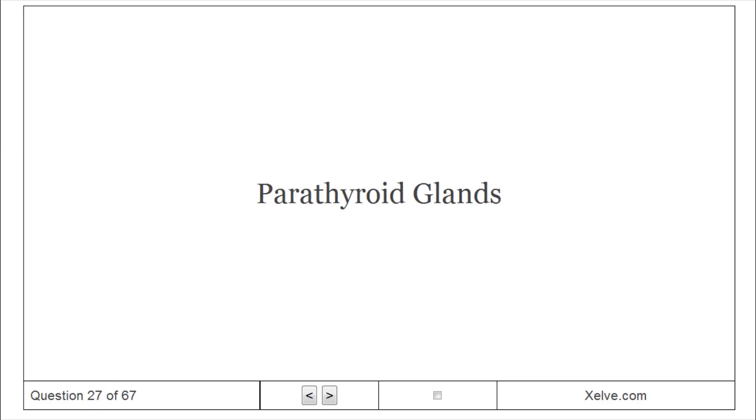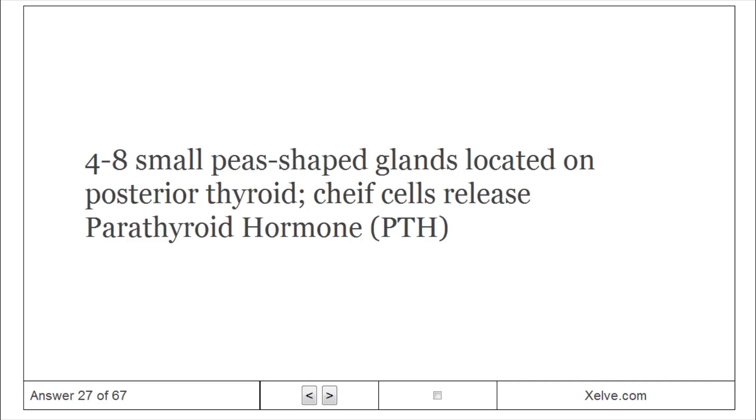Parathyroid glands: four to eight small pea-shaped glands located on posterior thyroid. Chief cells release parathyroid hormone, PTH.